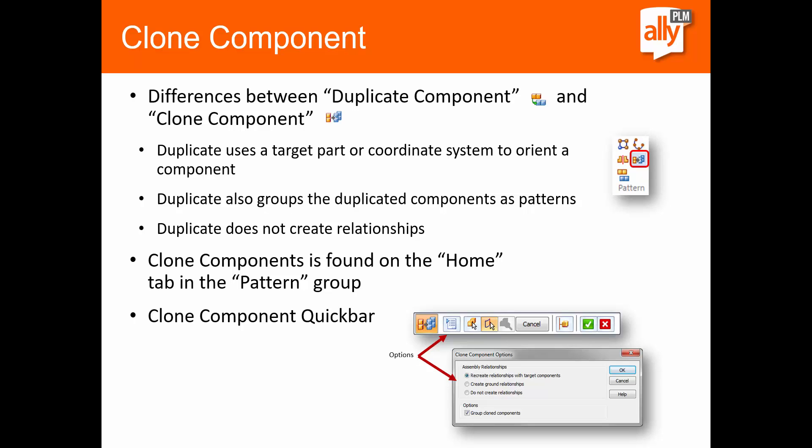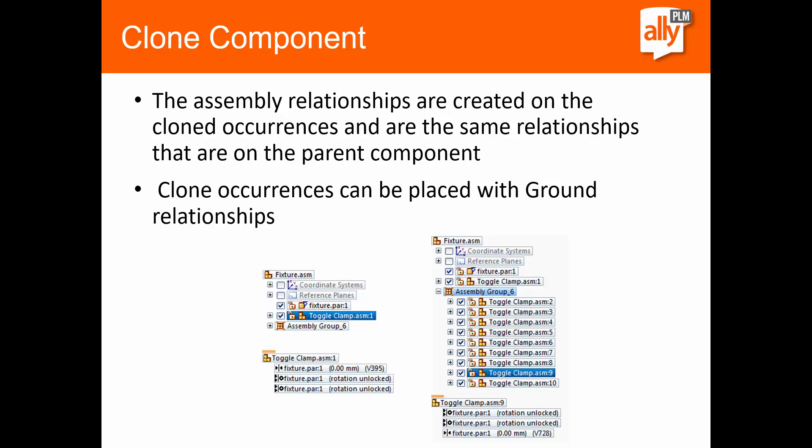That was the one drawback to the duplicate component command. Now what clone component allows us to do is create those relationships, and they are not just grouped as a pattern — they are separate occurrences of that part or sub-assembly. The clone component command is found in the Home tab in the pattern group. We can see down here at the bottom our quick bar and a couple of the options: we can recreate those relationships, do a straight ground relationship, or create no relationships at all. After it is cloned, we see it listed in the Pathfinder as an assembly group with all of the components and their assembly relationships.